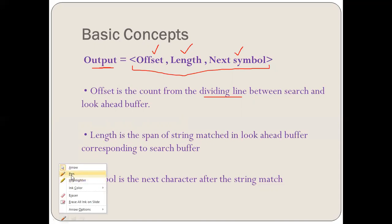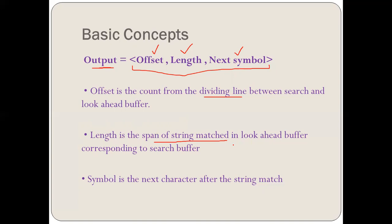Next is length. Length is the total string matched, or the span of string matched in the look-ahead buffer corresponding to the search buffer. We match the alphabets from look-ahead buffer corresponding to the search buffer, and whatever total length is matched is defined as the length. The third thing is the symbol — the next character of the string encountered after the complete match of the string. For example, if AA is matched and then C appears, the next symbol is C.